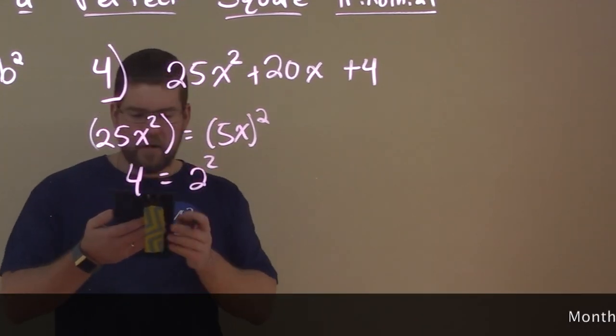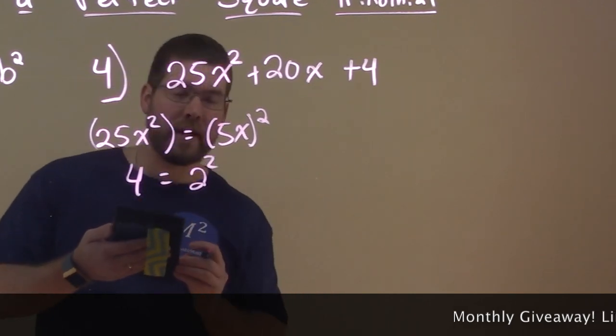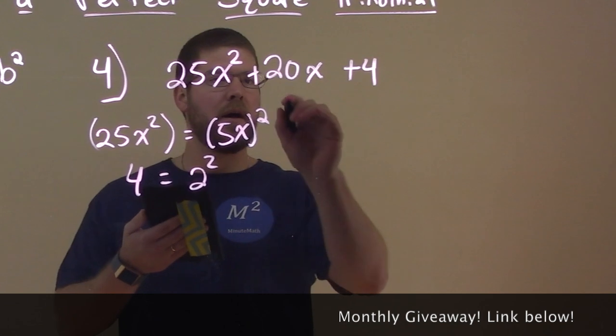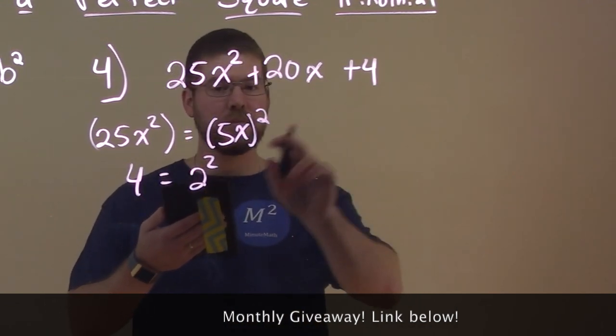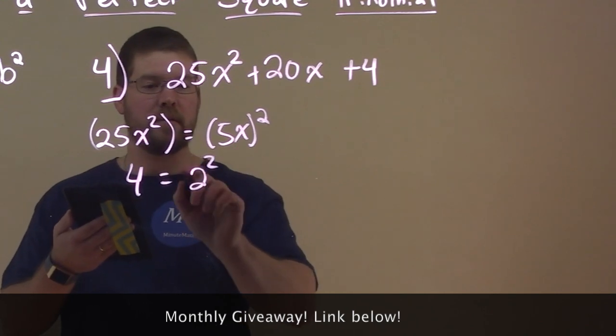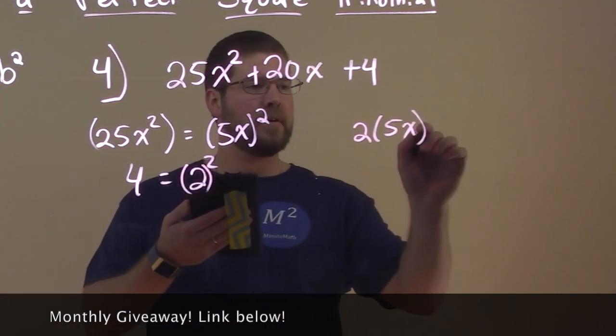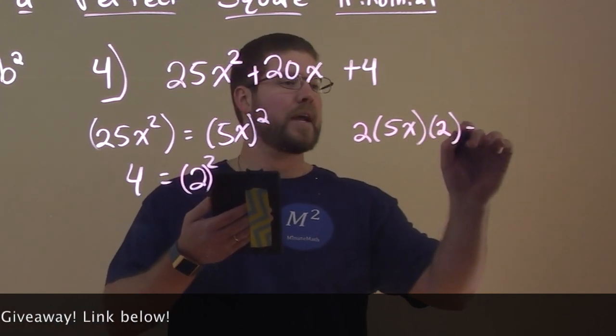So now, we want to check to see if the middle term is twice the product of 5x and 2. Okay, so we have the middle term is the product of twice 5x and 2, the inside parts here that we have. So 2 times 5x times 2. What does that come out to be?